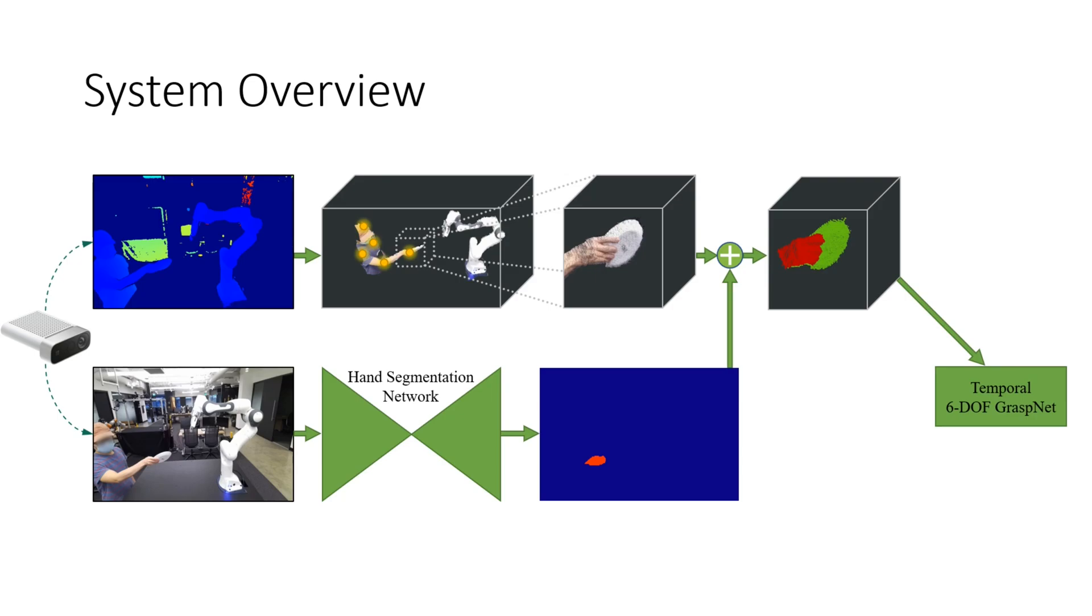The object points are sent to Sixtoff GraspNet, which generates grasps or refines them from the last time step conditioned on the object point cloud to make sure they're consistent over time.